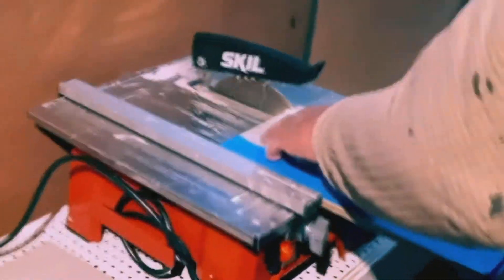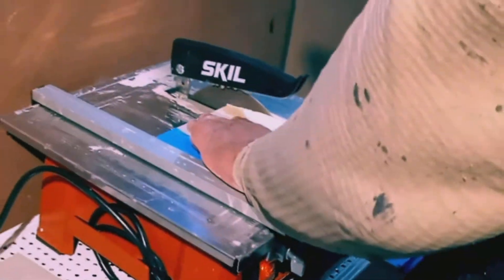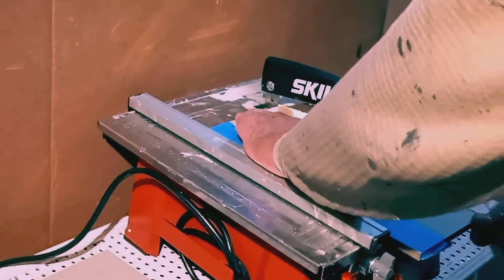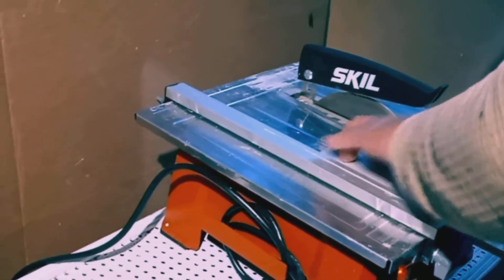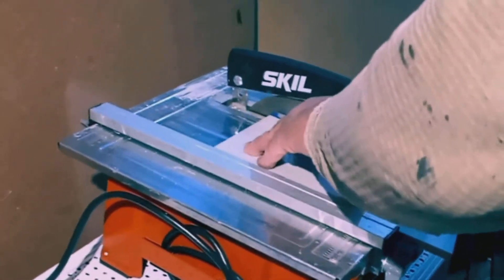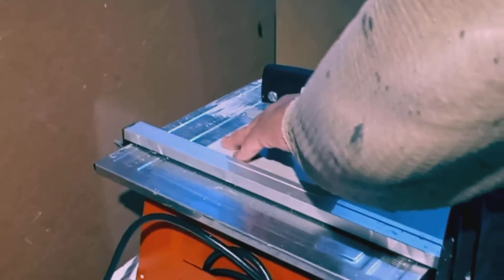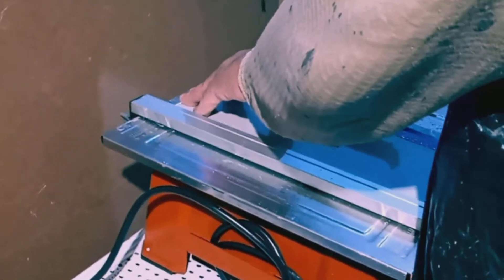Alright so when you're cutting your tile, make sure that black plastic guard is lowered just enough where it's not touching the blade but where it's hovering over it. That way you minimize the amount of spraying that you're getting on you. I didn't have it low enough so that's why I'm getting all wet over there. So just remember that when you're cutting your tiles.